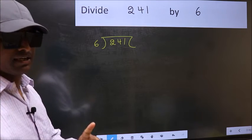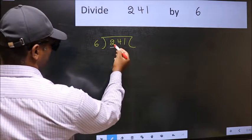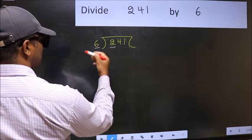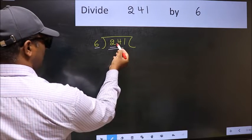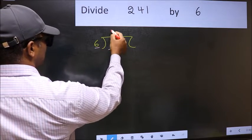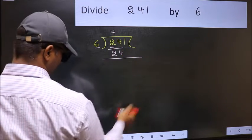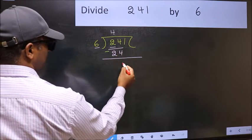Next, here we have 2 and here 6. 2 is smaller than 6, so we should take 2 numbers: 24. When do we get 24 in 6 table? 6 times 4 is 24. Now you should subtract 24 minus 24.